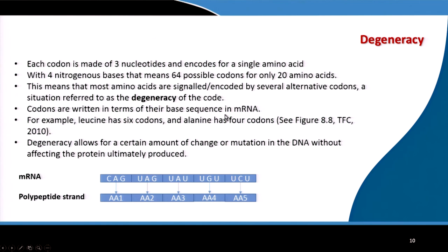These codons are written in their base sequence in the mRNA, and each set of three codes for an amino acid. Since we have 20 amino acids and 64 possible codons, several codons translate for the same amino acid. For example, leucine has 6 codons, alanine has 4 codons. Despite mutations and damage to the DNA, the species can continue to replicate its DNA and produce proteins — that is what really helps the species continue and survive.